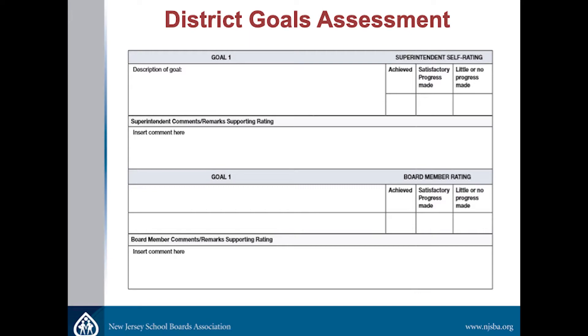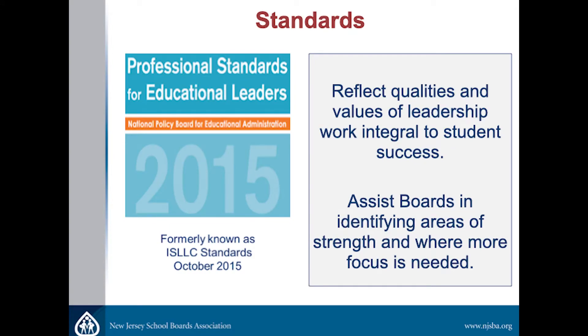That compiled document is electronically available to the board president through the system. There are two parts to the evaluation — the first part is the analysis of the goals. The second part addresses the criteria as prescribed by the State Board of Ed, which includes the national leadership standards. We use those as the basis for the standards in this evaluation tool, but we had to extract what standards were relevant for a board evaluating the superintendent. We also added governance, since that is an important part of the board-superintendent relationship.